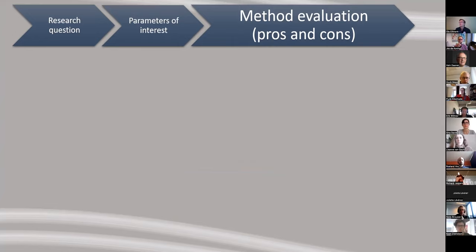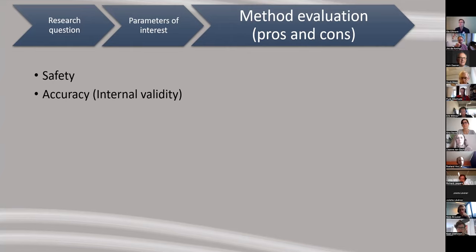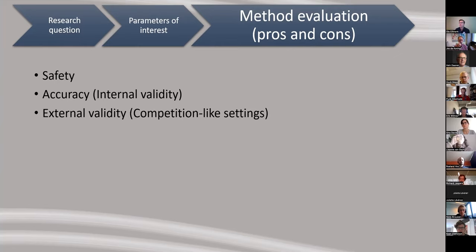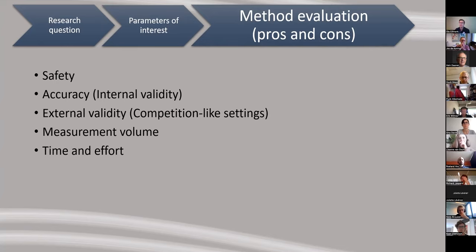Other parameters to consider when choosing a method include, first and foremost, safety — especially in sports like ski jumping and alpine skiing. Then accuracy, which is linked to internal validity; external validity, meaning how large a measurement volume your system can cover; and finally, how much time and effort the measurement system requires to set up and use.